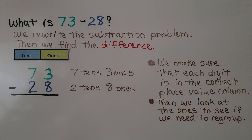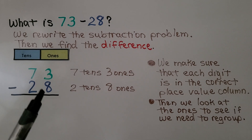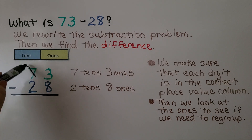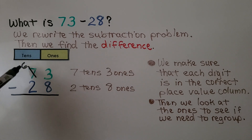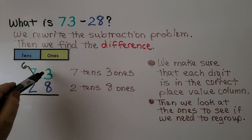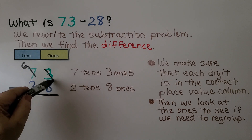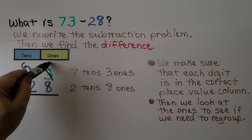Then we look at the ones to see if we need to regroup. We have three ones and we need to take away eight, so we don't have enough — we will need to regroup. The seven tens becomes six tens; we take one away and give it to the ones. Now, instead of three ones, we have thirteen ones.